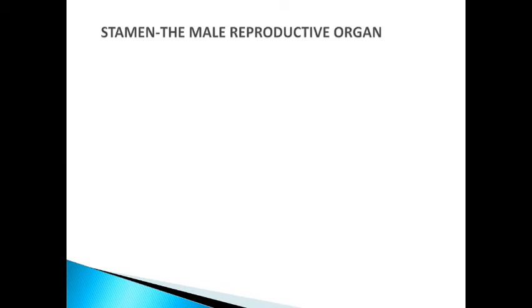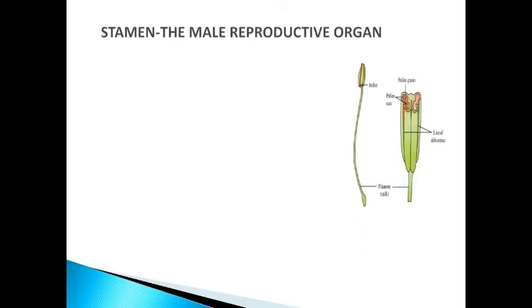Number 1: stamen, the male reproductive organ. In lecture number 5 we came to know the different parts of a typical flower. Androecium is the third whorl of a typical flower and is the male reproductive part. One unit of androecium is known as stamen, which represents the male reproductive organ. Stamen consists of two parts: filament and anther.